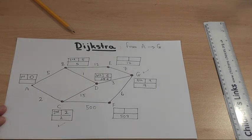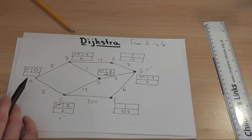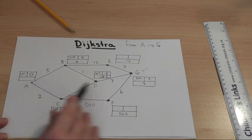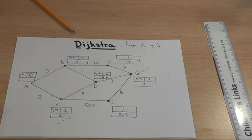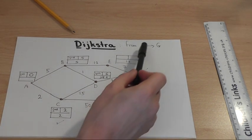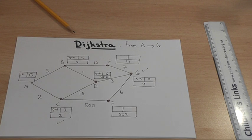But I've actually achieved more than that. From A to B is 5. From A to C is 2. From A to D is 6. From A to G is 9. Now I could stop there, because I've achieved what the question wanted. We stop once we've made our destination permanent.